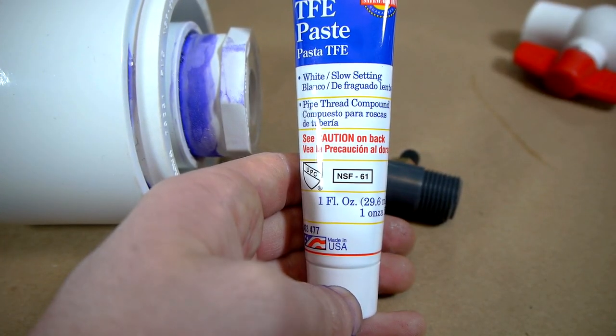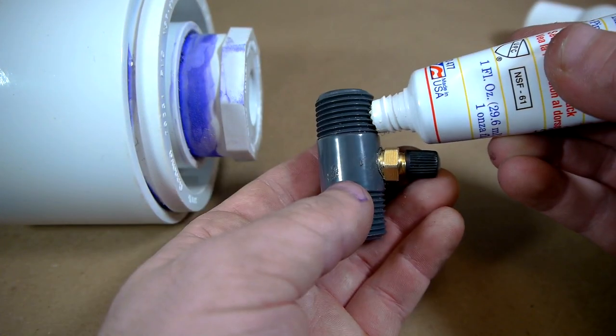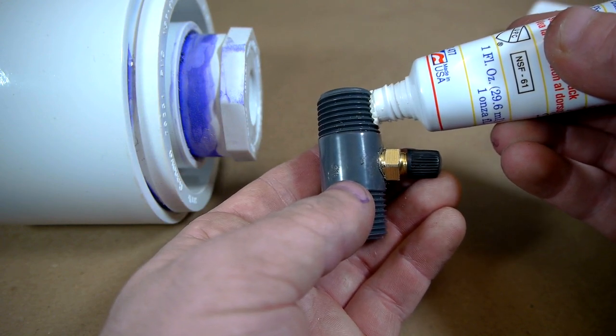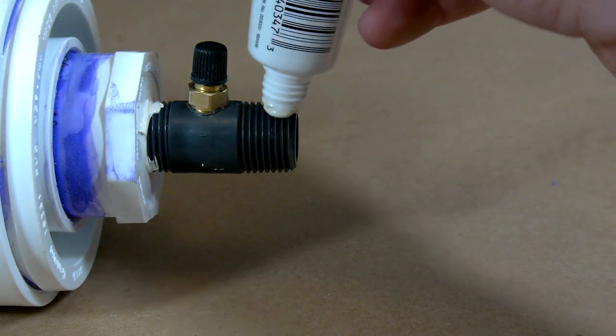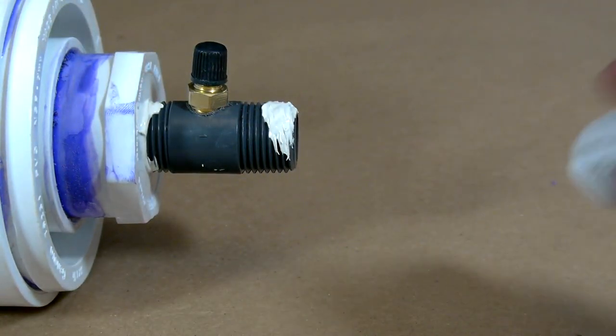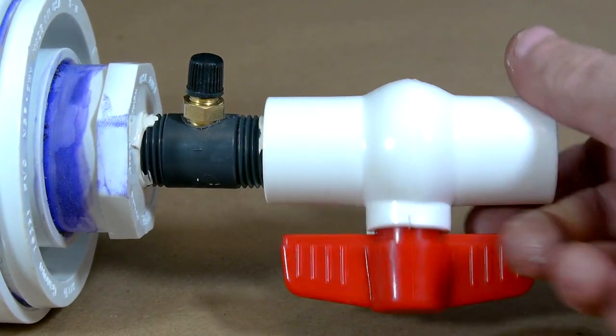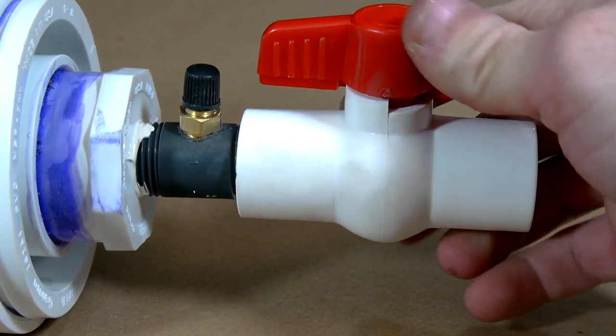The nipple can now be screwed into the reducer using some TFE pipe thread paste for an airtight seal. With a little more thread paste on the other end, the 1.5 inch ball valve can now be attached to the end of the cannon, and the whole thing can be set aside to begin work on the piston.